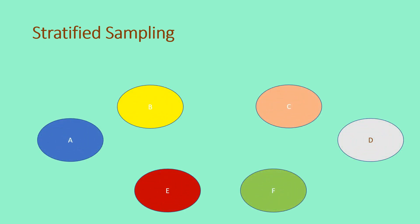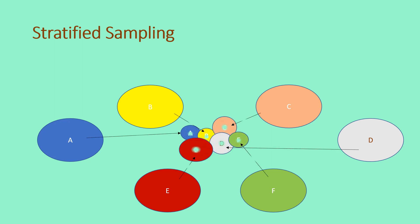Next is stratified sampling. This method of sampling is done by dividing the population into distinct groups called strata. After the grouping, draw randomly the individuals or elements from each stratum to form your sample. So this is how we conduct stratified sampling.